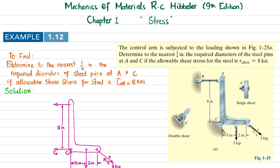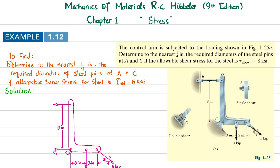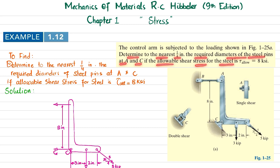Welcome back. In this video we are going to solve example 1.12 taken from chapter number 1, Stress, from the book Mechanics of Materials by R.C. Hibbeler 9th edition. The statement is: the control arm is subjected to the loading shown in figure 1-25A. Determine to the nearest 1/4 inch the required diameter of steel pins at A and C if the allowable shear stress for the steel is 8 KSI.